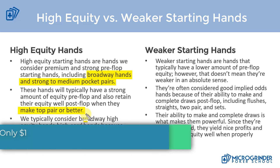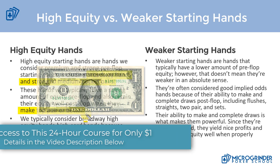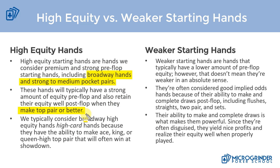When I say top pair or better, it could be top pair, a set, or hands such as king-queen and ace-jack that can make two pair, flushes, and straights. They can also make over pairs. Even when they just have top pair with a good kicker in a heads-up or three-way situation, they're going to do a good job of retaining their equity. We typically call these high card hands because on a range chart they represent the high value hands.